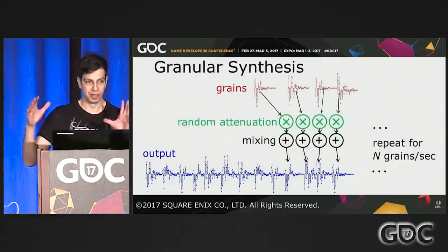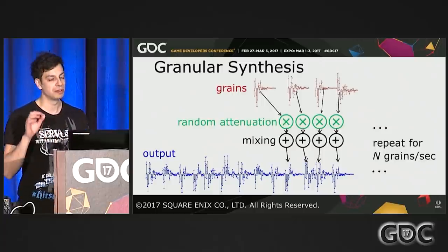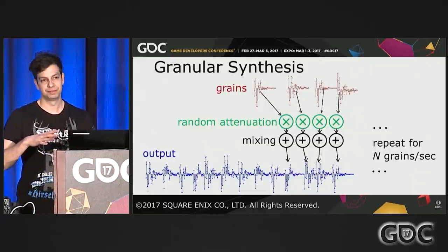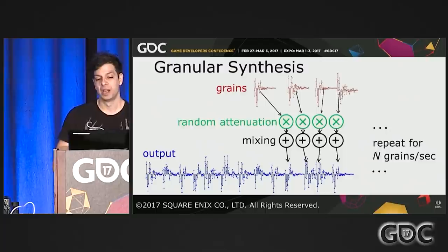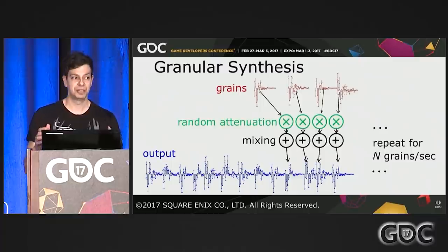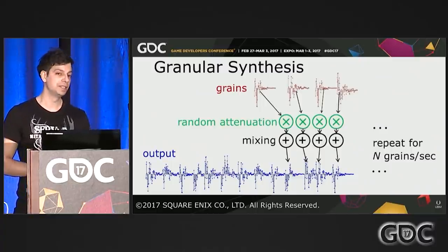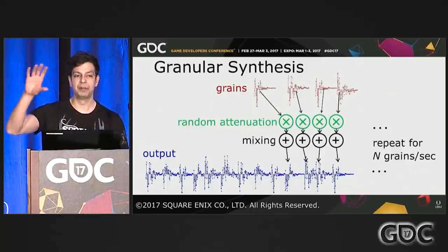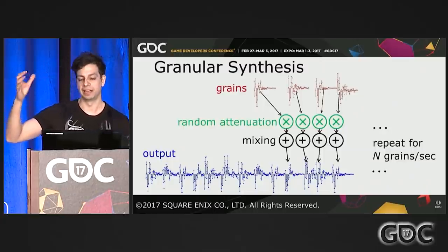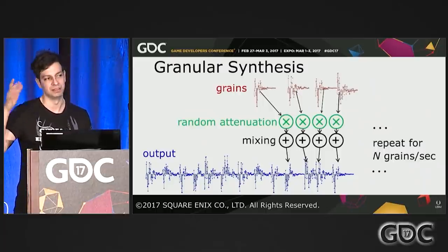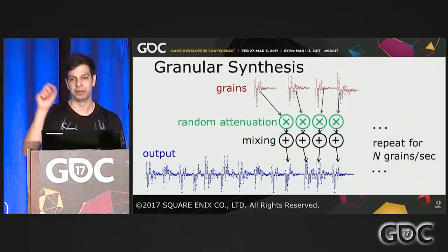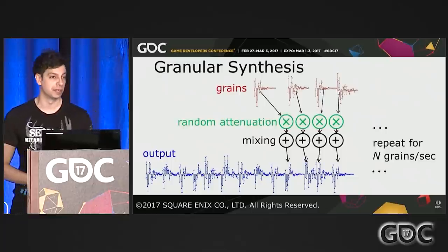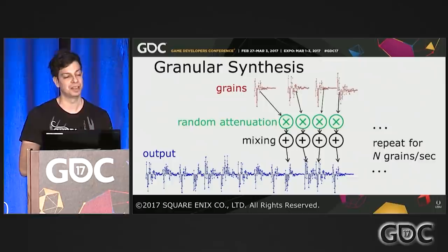A granular sound consists of grains — many single sound events. In the case of water, those events are air bubbles trapped in the water resonating at resonance frequencies. To synthesize such sounds we use granular synthesis: we take recordings or waveforms of those single sound events and mix a lot of them together. In practice, we limit the number of grains to a few hundred, and to increase variation we apply random attenuation — each grain plays at full intensity one time, then maybe half intensity the next. We place the attenuated grains at random points in time, at a certain number of grains per second: for heavy rain maybe 100,000; for very light rain maybe 100 or 1,000.